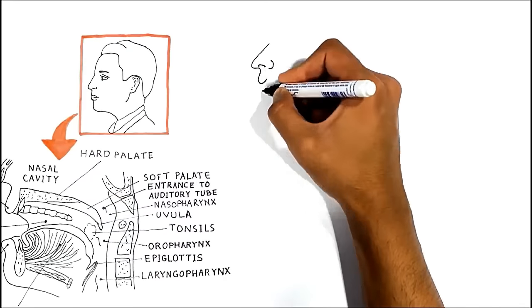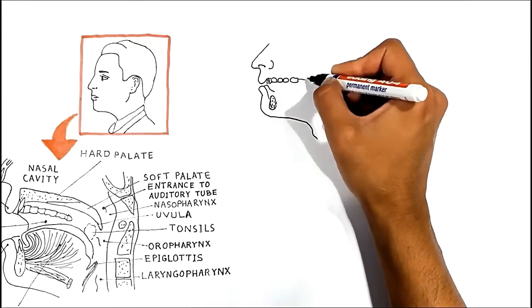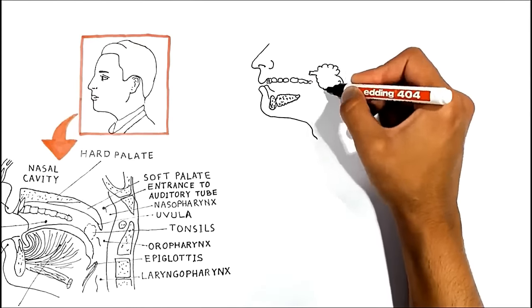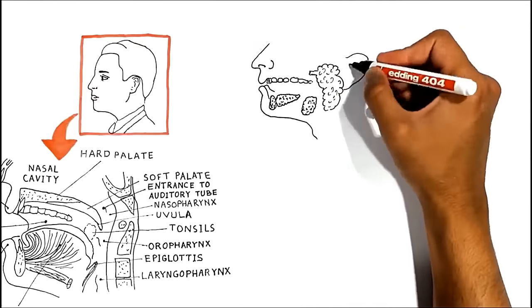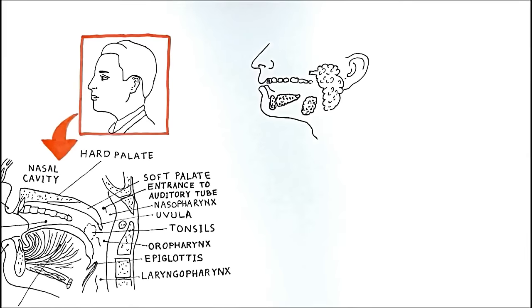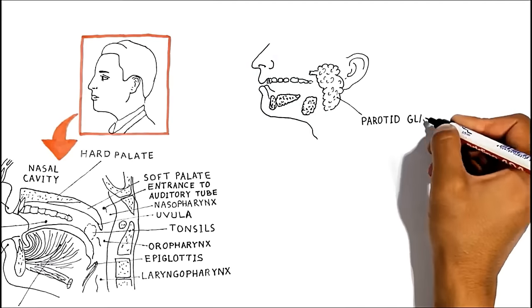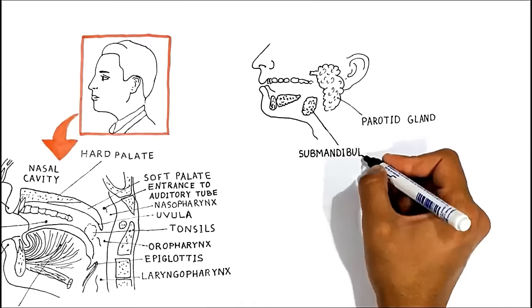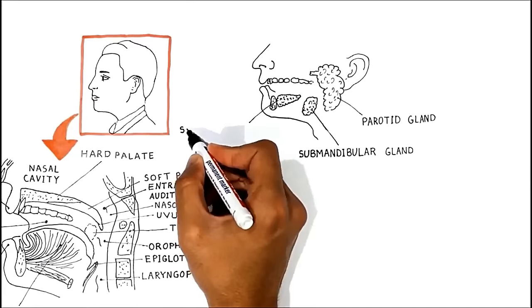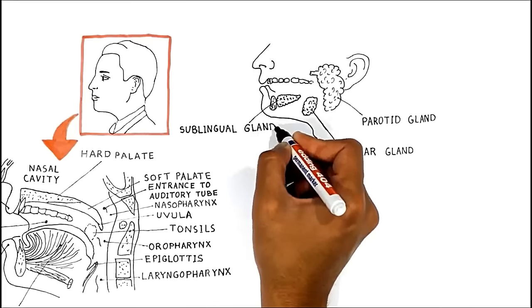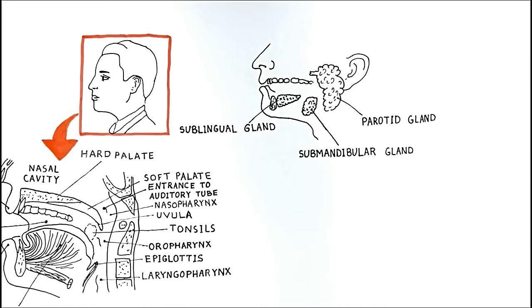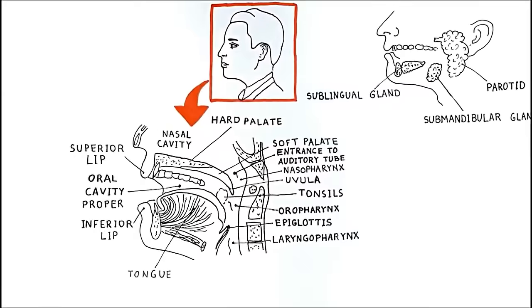The other important structures which are in close relation with the oral cavity are the salivary glands. It is extremely important to know that the major salivary glands, the parotid, the submandibular and the sublingual glands ducts open within the oral cavity structures, but remember they are not part of the oral cavity. In addition to them, the oral cavity is rich in its own minor salivary glands.